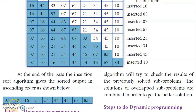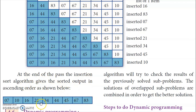Finally, the sorted list will be: 7, 10, 16, 21, 34, 44, 45, 67, and 83. At the end of each pass, the insertion sort algorithm gives the sorted output in ascending order as shown.